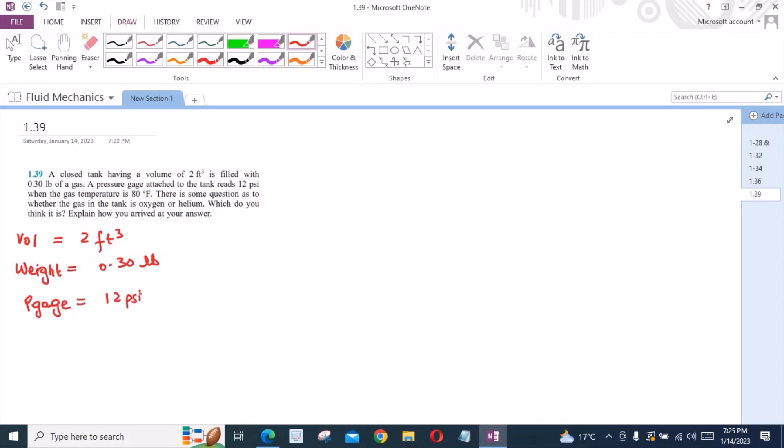But we would require for our calculation the absolute pressure. Absolute pressure is equal to the sum of gauge pressure plus atmospheric pressure. So from here, P absolute is 12 plus 14.7 which is the atmospheric pressure. So absolute pressure could be written as 26.7 psi. We would be using this value.